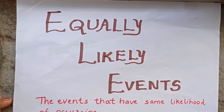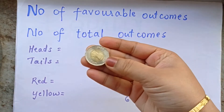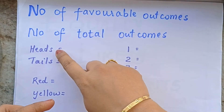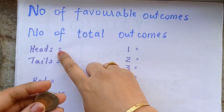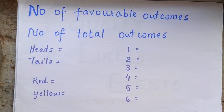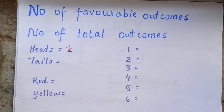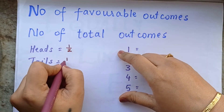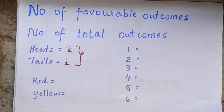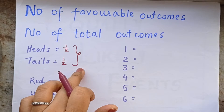For example, a coin. A coin has a head and a tail. The number of favorable outcomes when getting a head is 1, and total outcomes is 2. So the probability of getting heads is 1/2. The same for tails is 1/2. Since heads and tails have the same probability, these two events are called equally likely events.